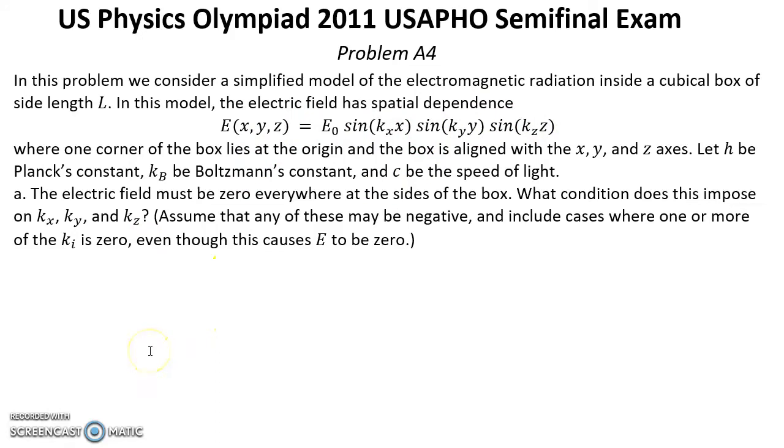Where one corner of the box lies at the origin and the box is aligned with the X, Y, and Z axes. Let H be Planck's constant, K be the Boltzmann's constant, and C be the speed of light.